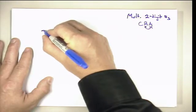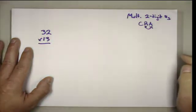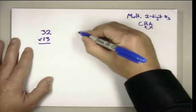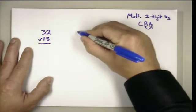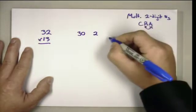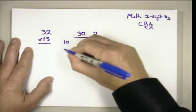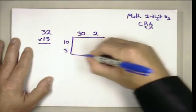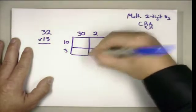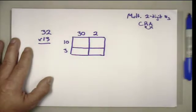Let's take a look at the problem 32 times 13. One of the things that we said we could do is decompose based on place value and set up an area model. So 32 would be 30 and 2, and 13 decomposes to 10 and 3. Now we can set up our area model and we can do our composition.